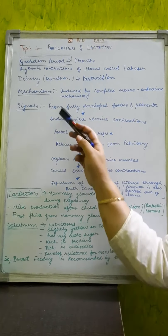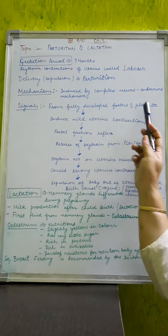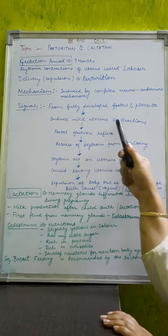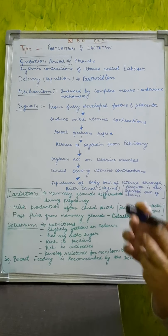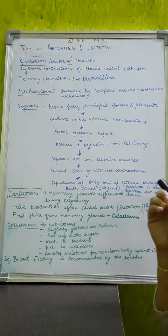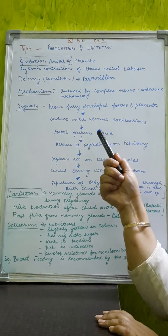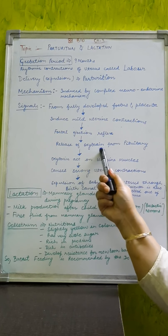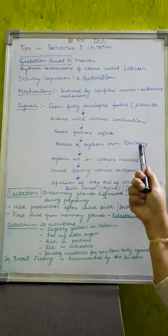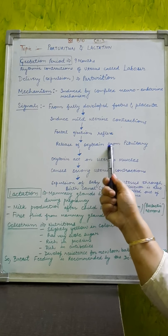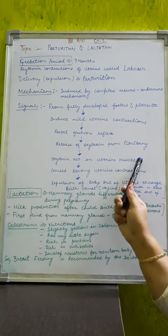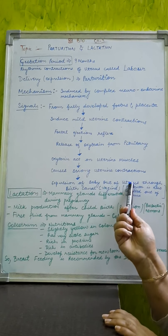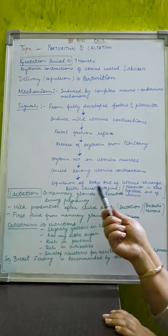From where the signal proceeds? It is from the fully developed fetus and placenta, signal starts from here and that causes or induces mild uterine contractions. The fetus also responds with fetal ejection reflex. This reflex causes the release of hormone that is oxytocin. So this is the most important word here, oxytocin. From where it is released? It is released from the pituitary and this oxytocin causes the uterine contractions of the muscles of uterus and when uterine contractions occur, there will be a forceful expulsion of the baby out of the uterus through the birth canal and you know birth canal is also known as vagina.